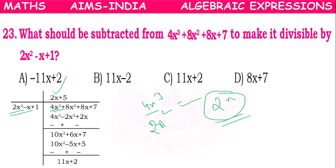With 2x, we have to multiply all the terms: 2x × 2x² = 4x³, 2x × (-x) = -2x², 2x × 1 = 2x. Let's change all the signs: 4x³ - 4x³ cancel, 8x² + 2x² = 10x², plus 8x - 2x = 6x. We can carry down the next term which is 7.